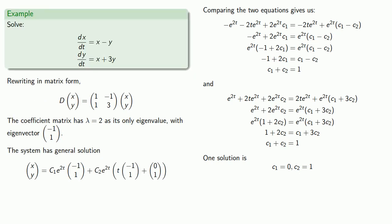And that'll give us our general solution, e to power 2t times t minus 1, 1 plus 0, 1. And as before, any linear combination will give us a solution.